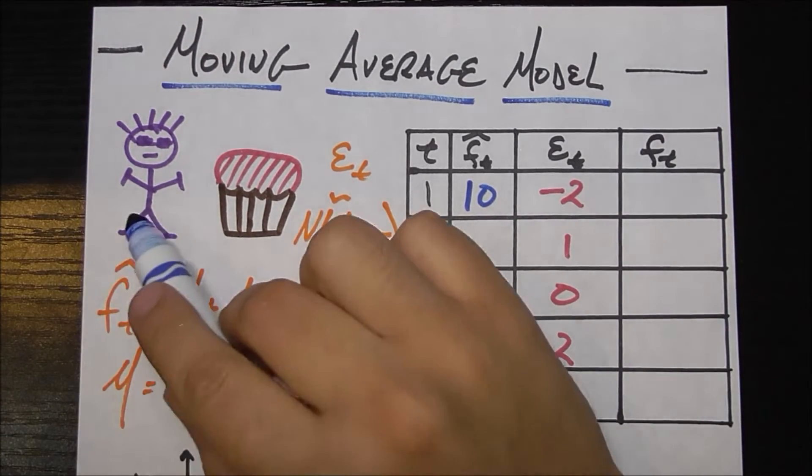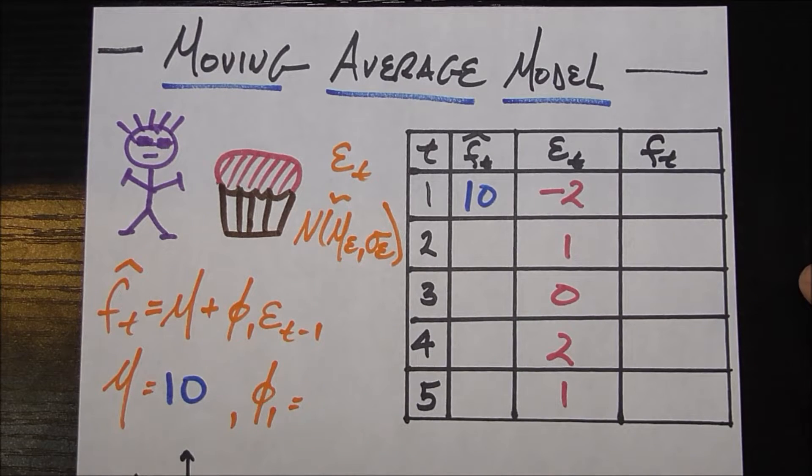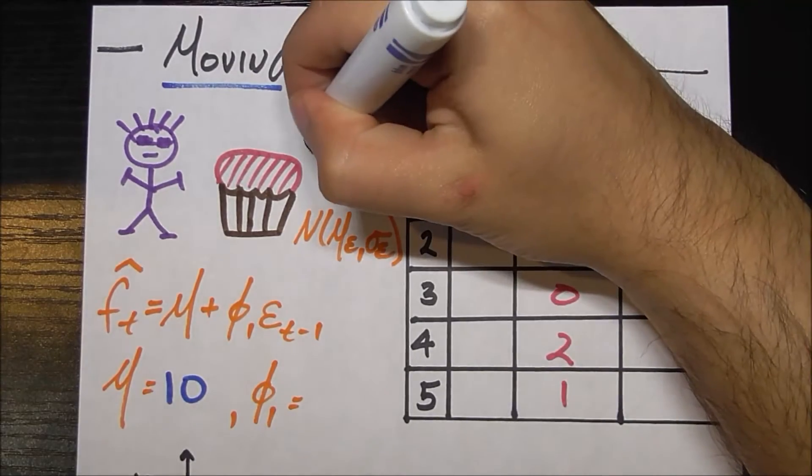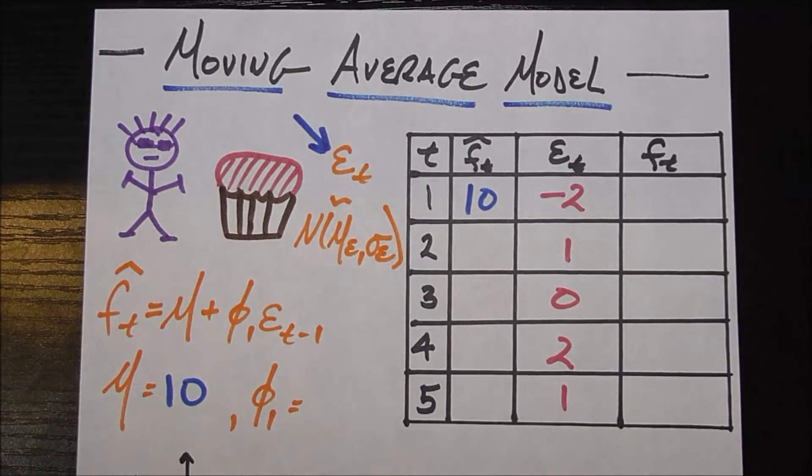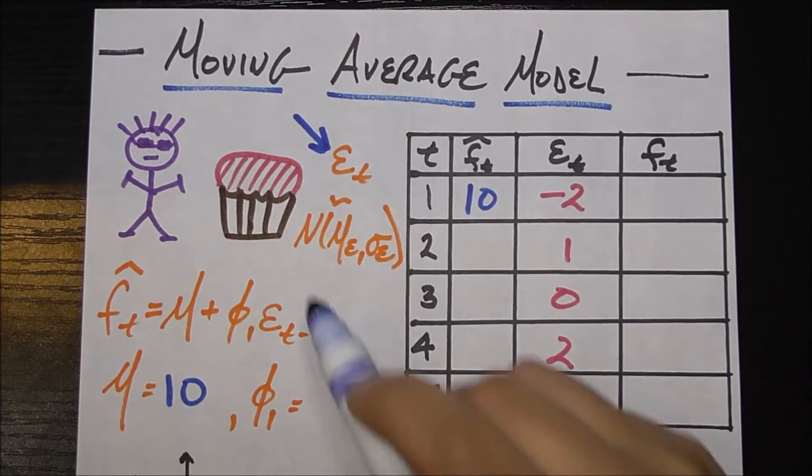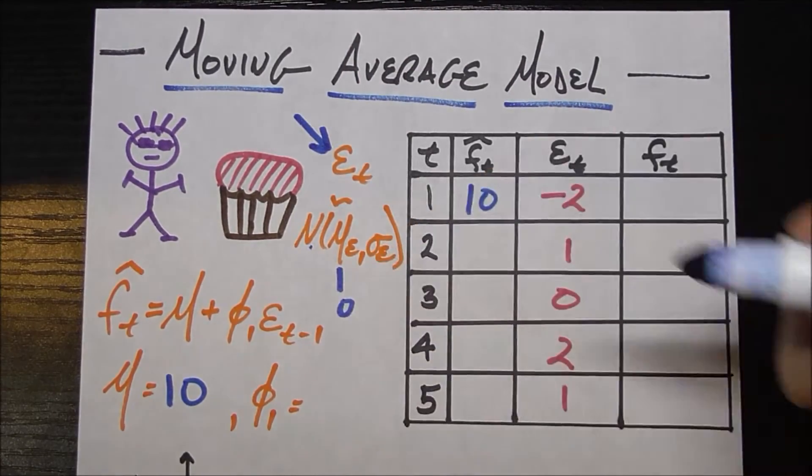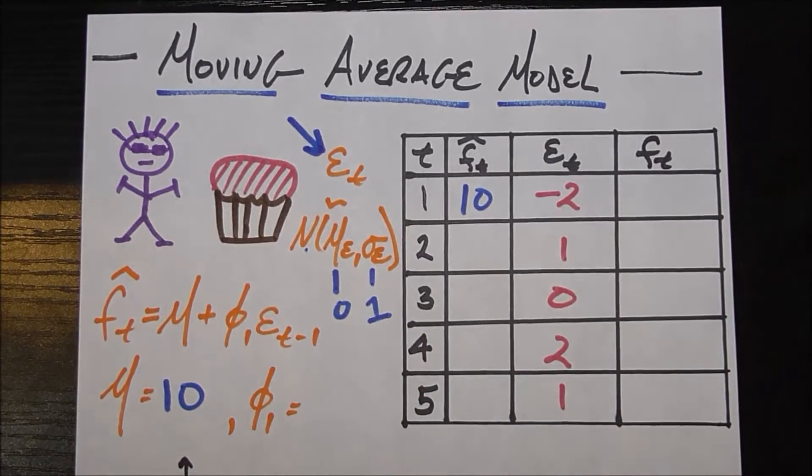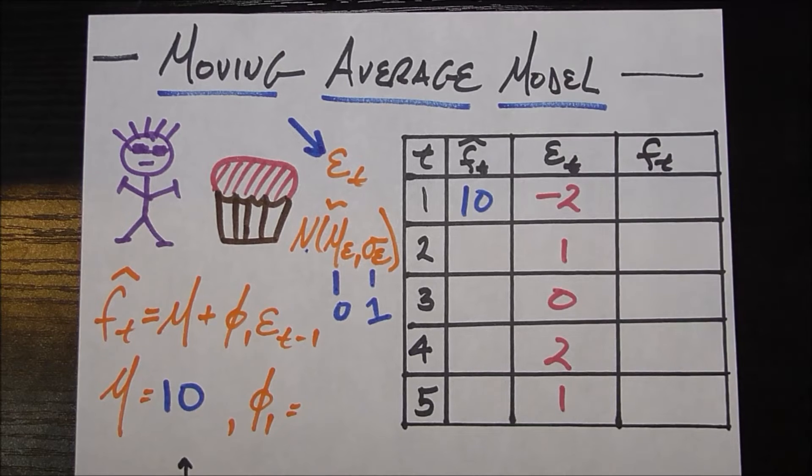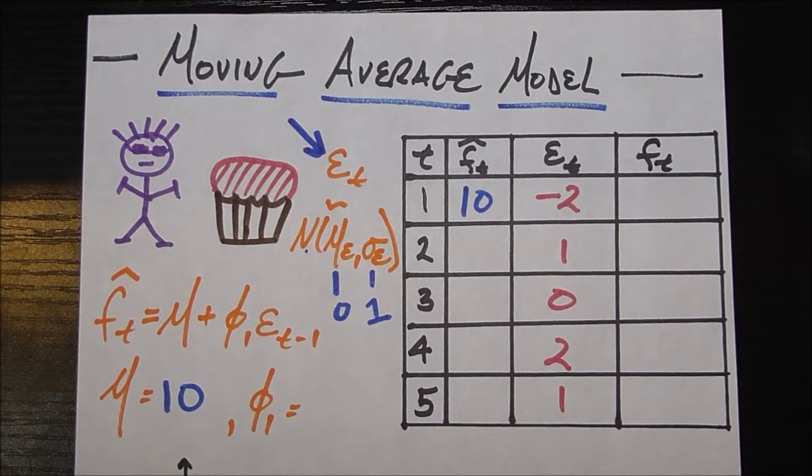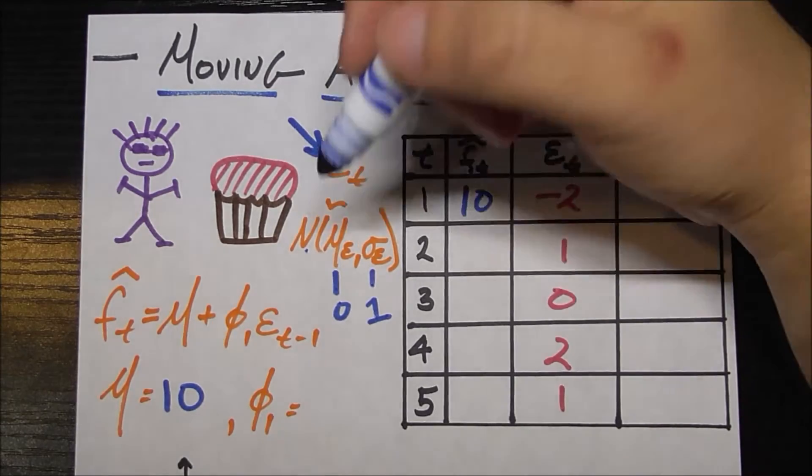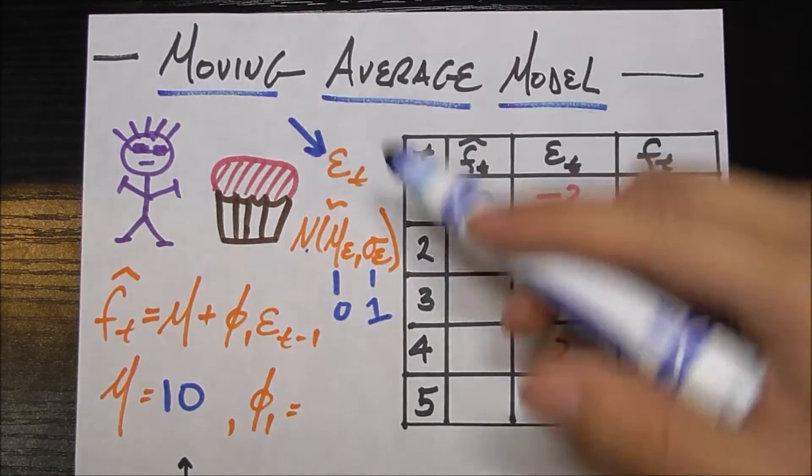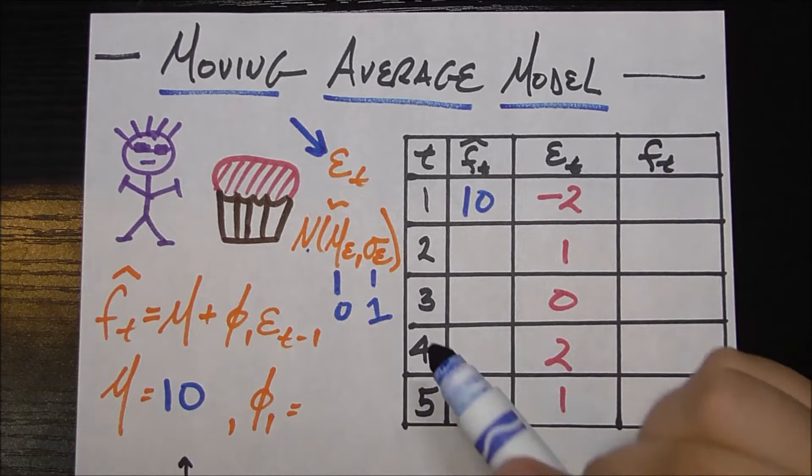Now, remember, this professor is crazy. So part of him being crazy is that every month he's going to say you brought the wrong number of cupcakes by some amount. And that amount, being how many cupcakes he said you were wrong by, e sub t is normally distributed with mean mu sub e, we're going to say that's zero, and standard deviation sigma sub e, we're going to say that's one.